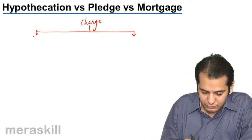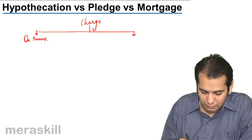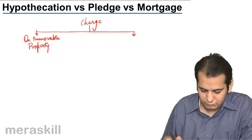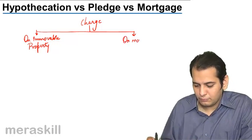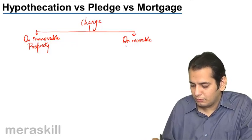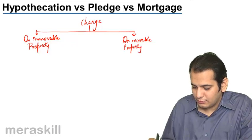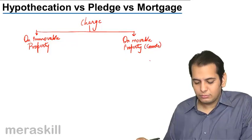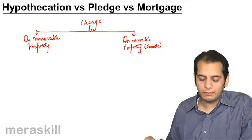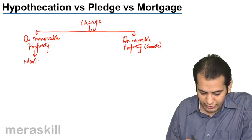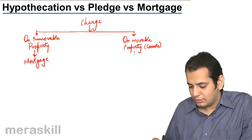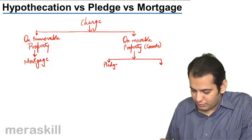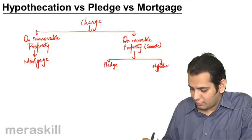The first type of charge is on immovable property, and the second is on movable property, that is goods. On immovable property, the charge created is called mortgage. On movable property, there are two types: pledge and hypothecation.